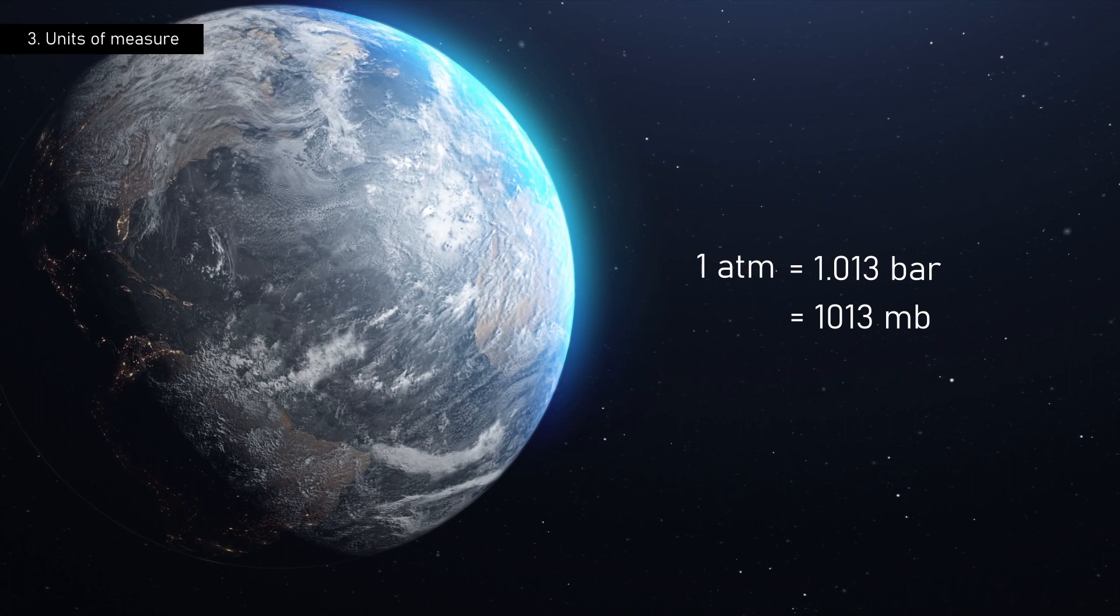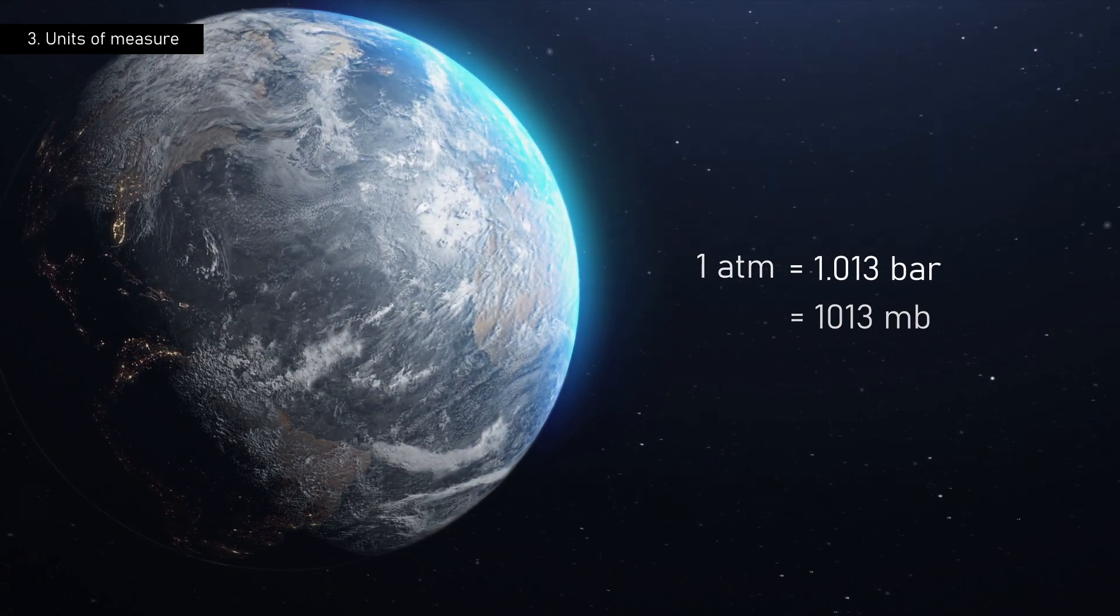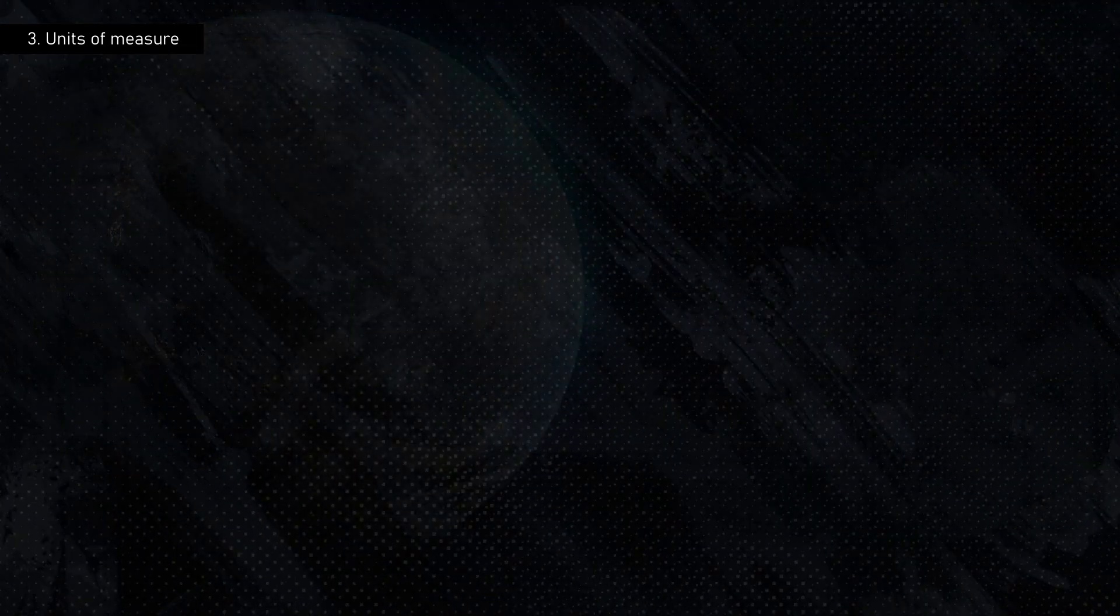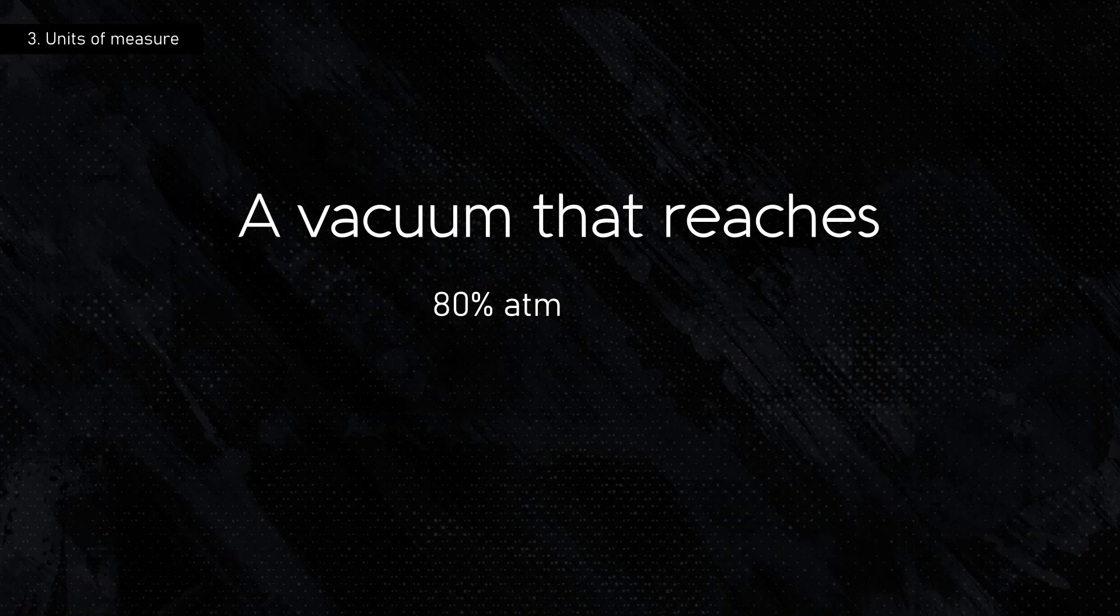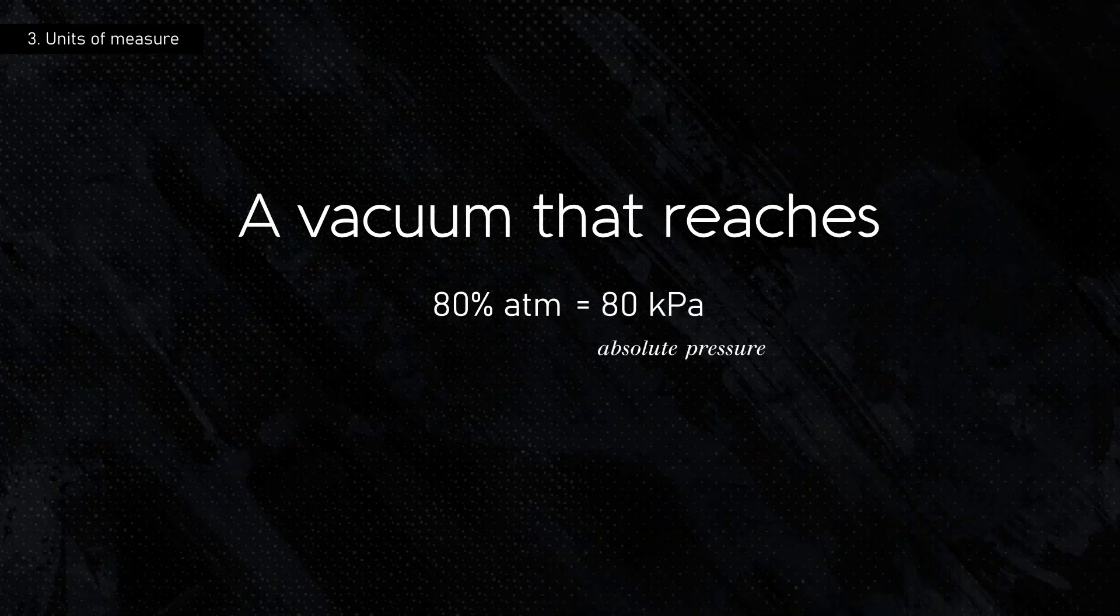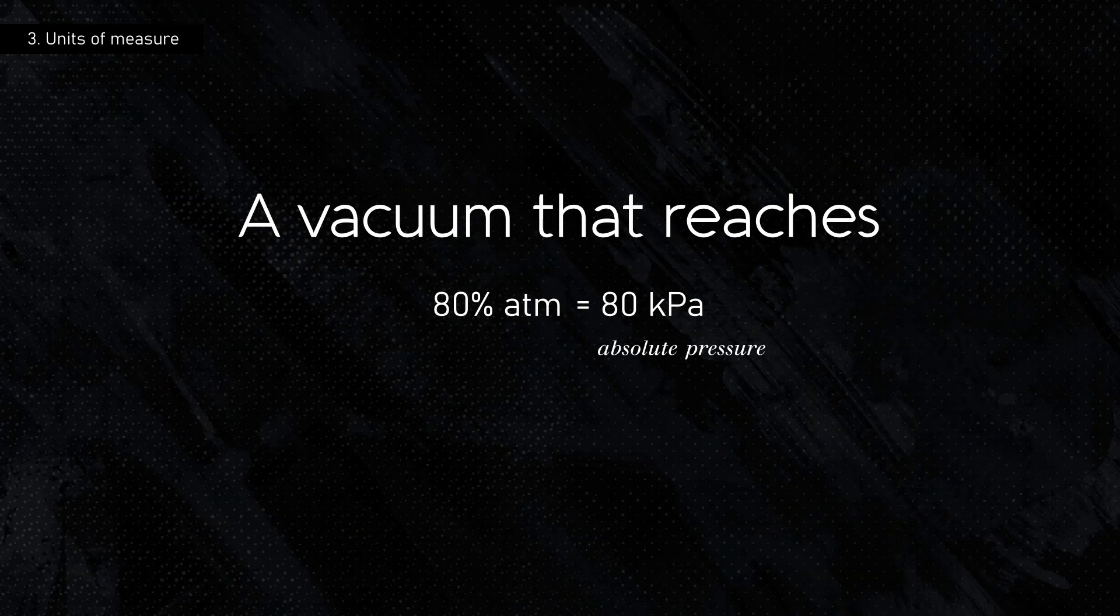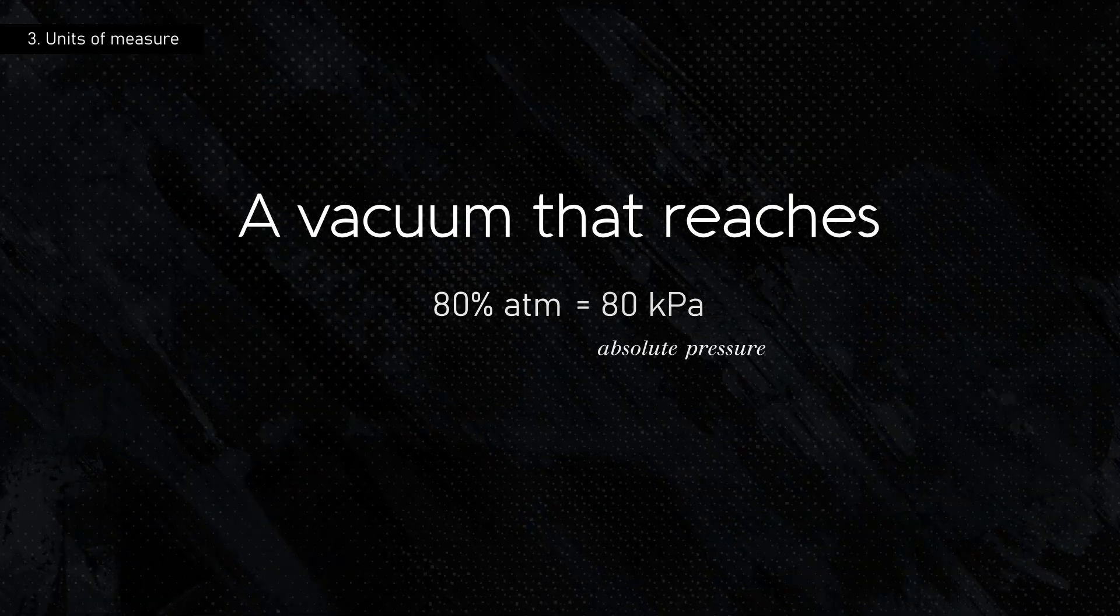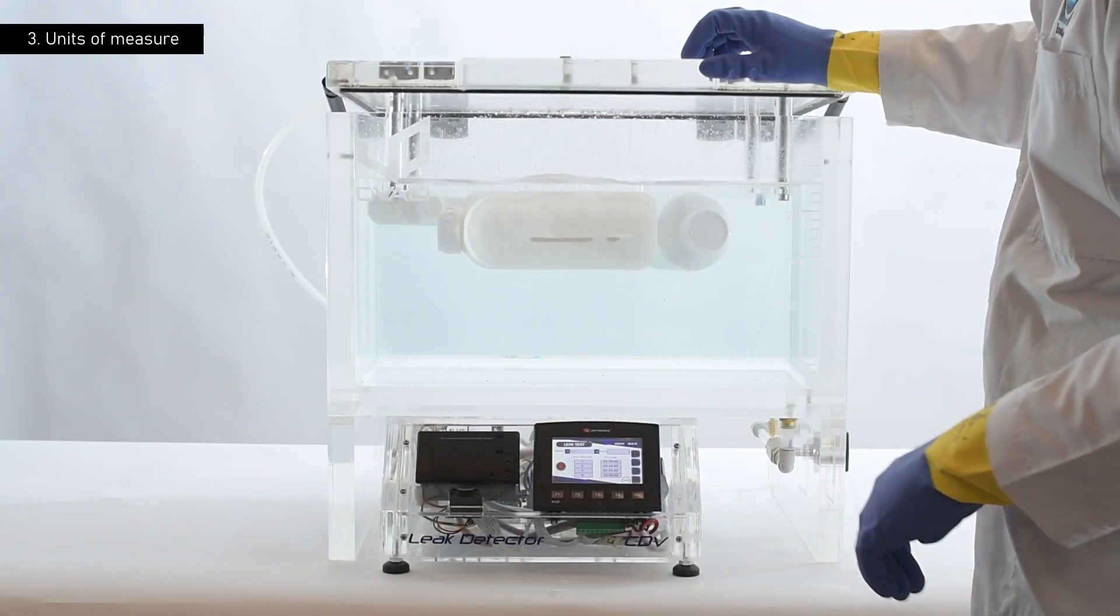Today, it is common to express vacuum levels as percentages of the atmosphere. For example, a vacuum that reaches 80% of the atmosphere has an absolute pressure of approximately 80 kilopascals. This way of expressing pressure is especially useful for describing and analyzing conditions in vacuum chambers.